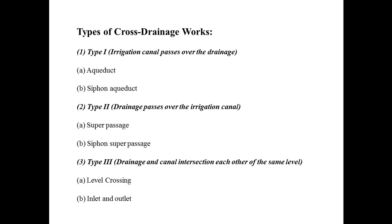Next is type three. In type three, the natural drainage and canal intersect each other at the same level, meaning that the natural drainage and canal intersection are on the same level. For this type, the cross drainage works which are constructed are: level crossing, and number B is the inlet and outlet. These two types of structures are constructed when the natural drainage and the canals are on the same level.